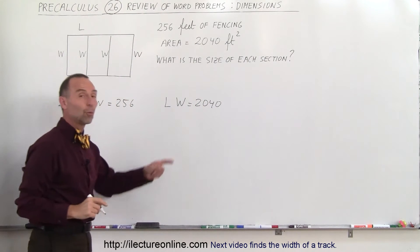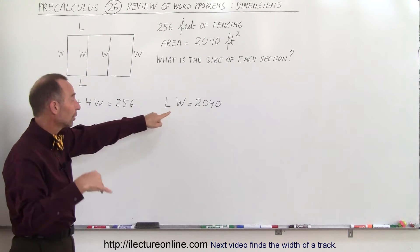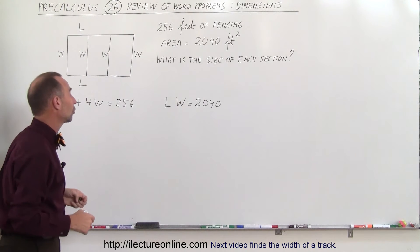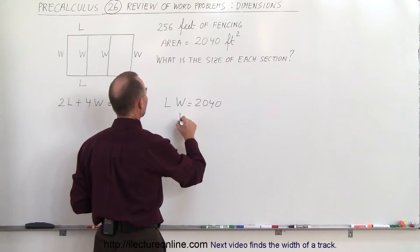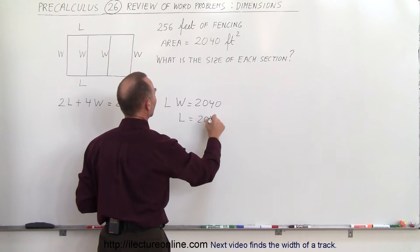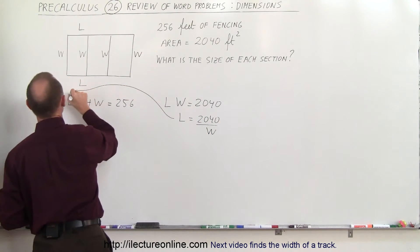That allows us to solve for one of the variables in terms of L or W, in terms of the other variable and then substitute that into this equation right here. So let's go ahead and do that. So what we can do is we can say that the length is equal to 2,040 divided by the width and substitute that in for the length right there.